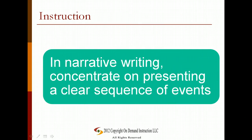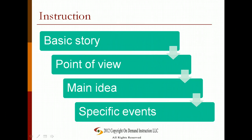In planning, writing, and revising narratives, focus on the order of events and concentrate on presenting a clear sequence of events. When you've decided on a basic story, select a point of view — a first person narrator, for example, might be best for a story about a personal experience. Write the main idea that either sets the scene or focuses on some general truth or principle, then decide which specific events and details should be included.